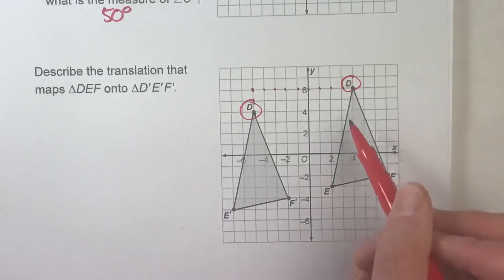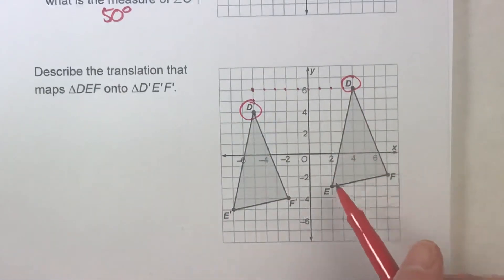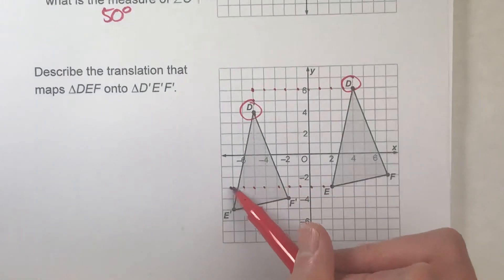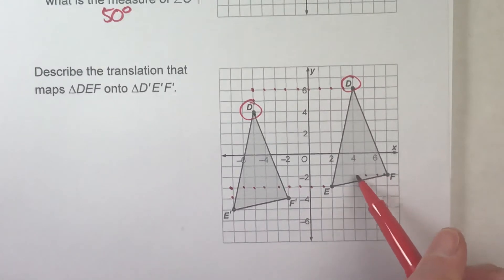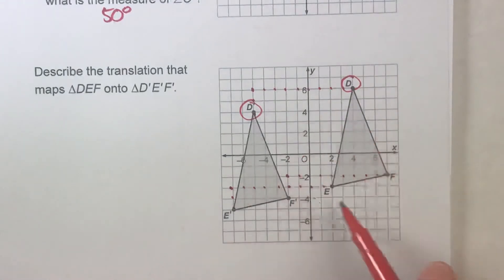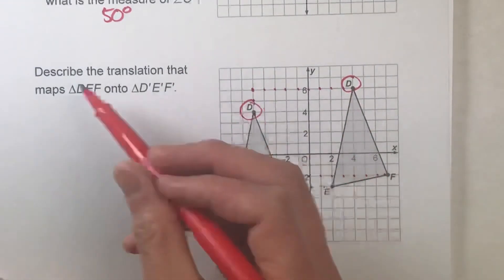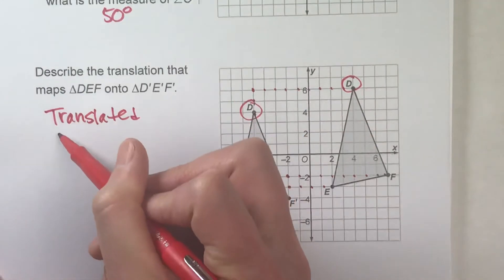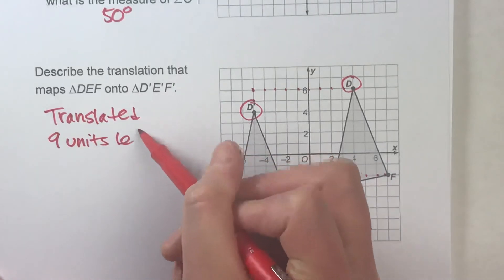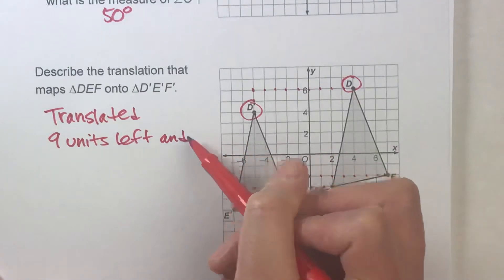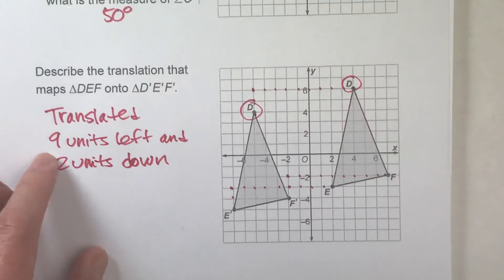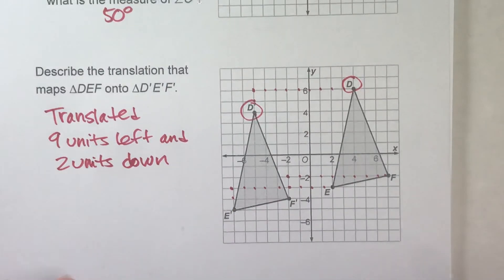And it shouldn't matter which vertex of this triangle we pick, they should all be the same. So for E—1, 2, 3, 4, 5, 6, 7, 8, 9. And down 2. For F—1, 2, 3, 4, 5, 6, 7, 8, 9. And down 2. So it doesn't matter which ones you pick. Every single point is translated 9 units left and 2 units down. And notice, we have to give the distance and the direction to describe the translation.